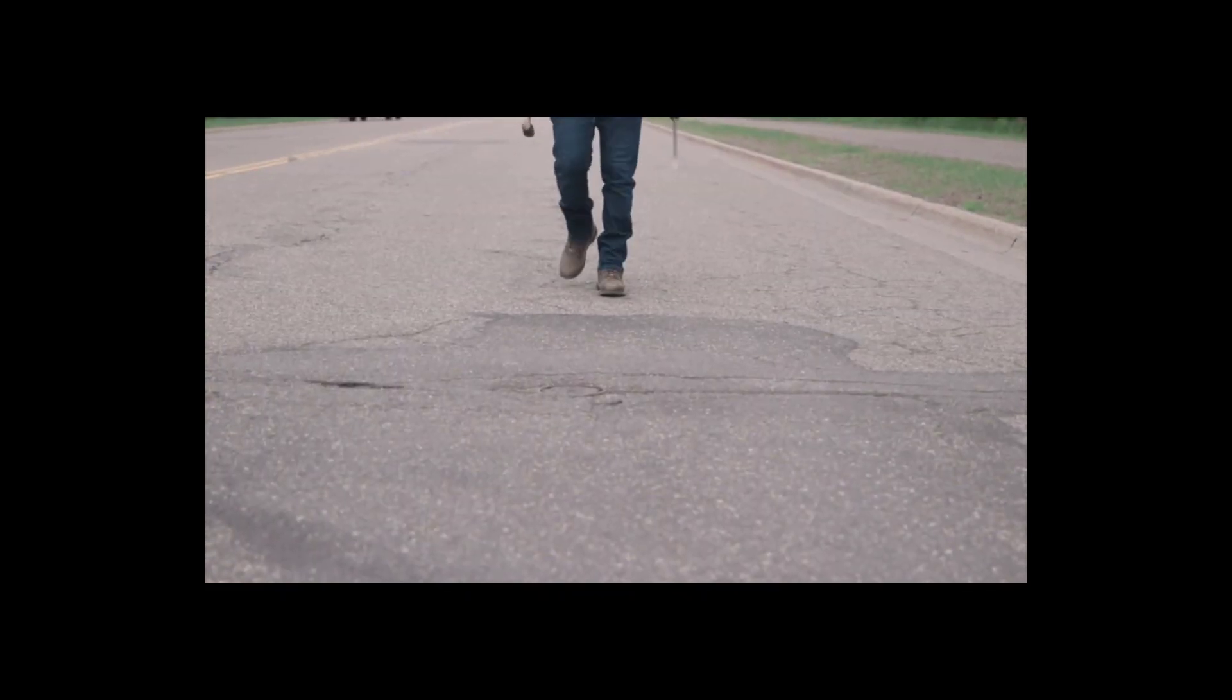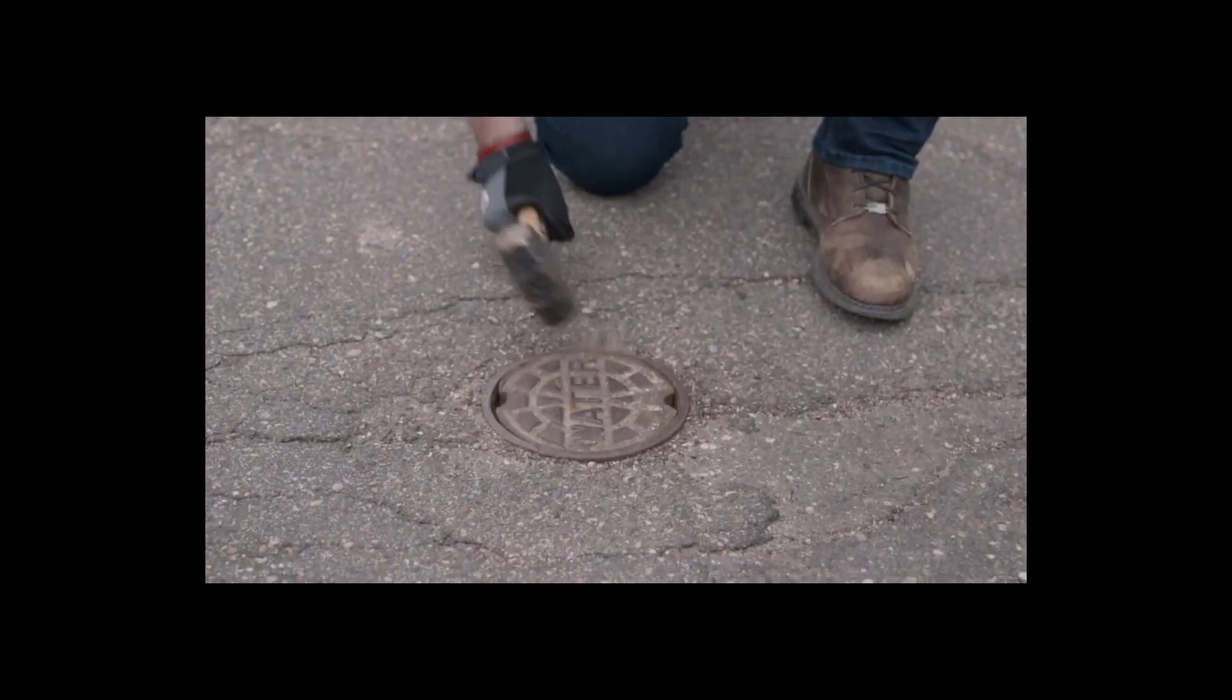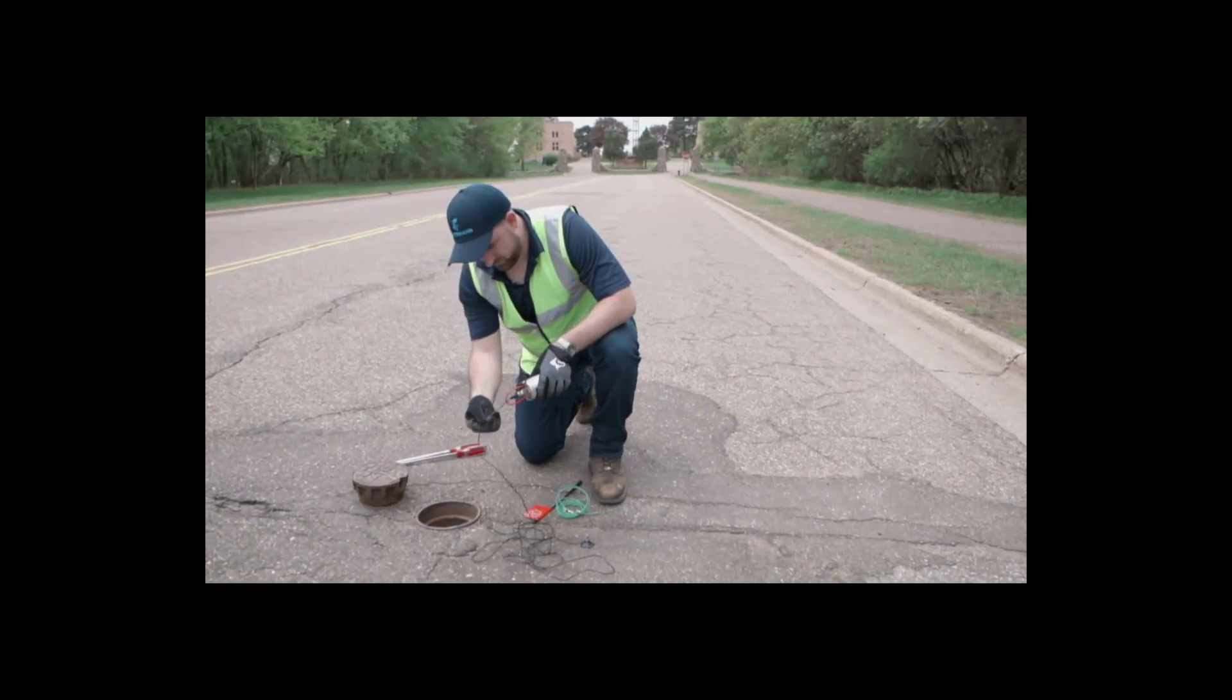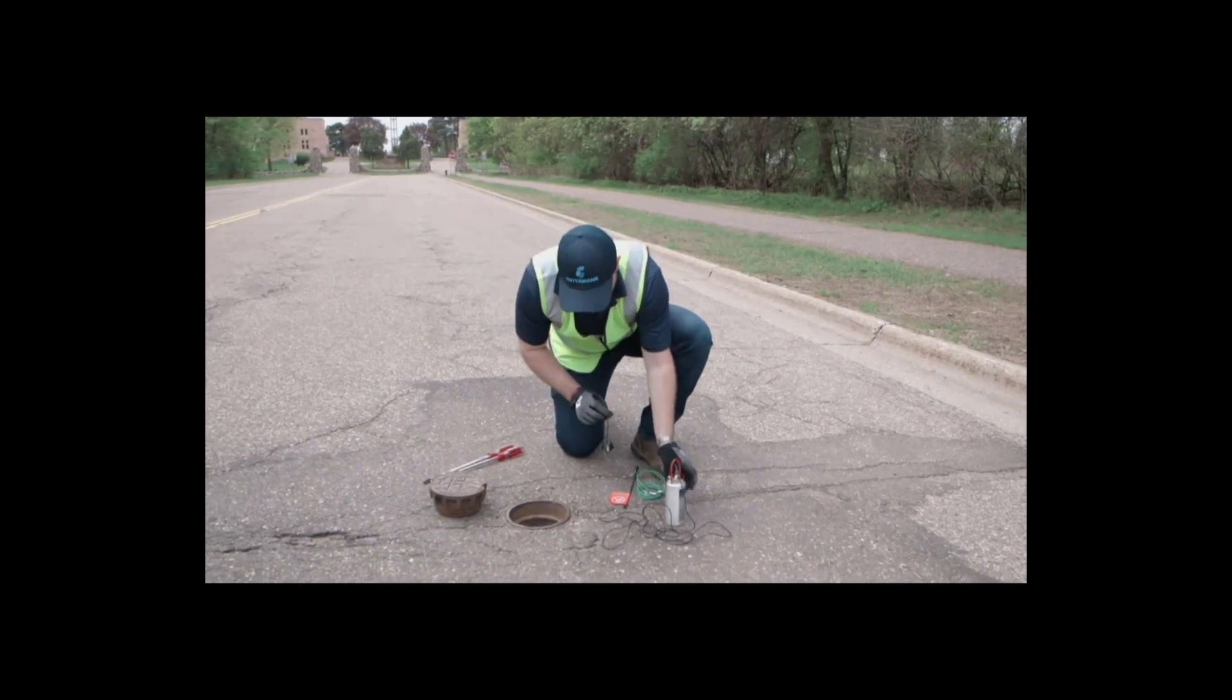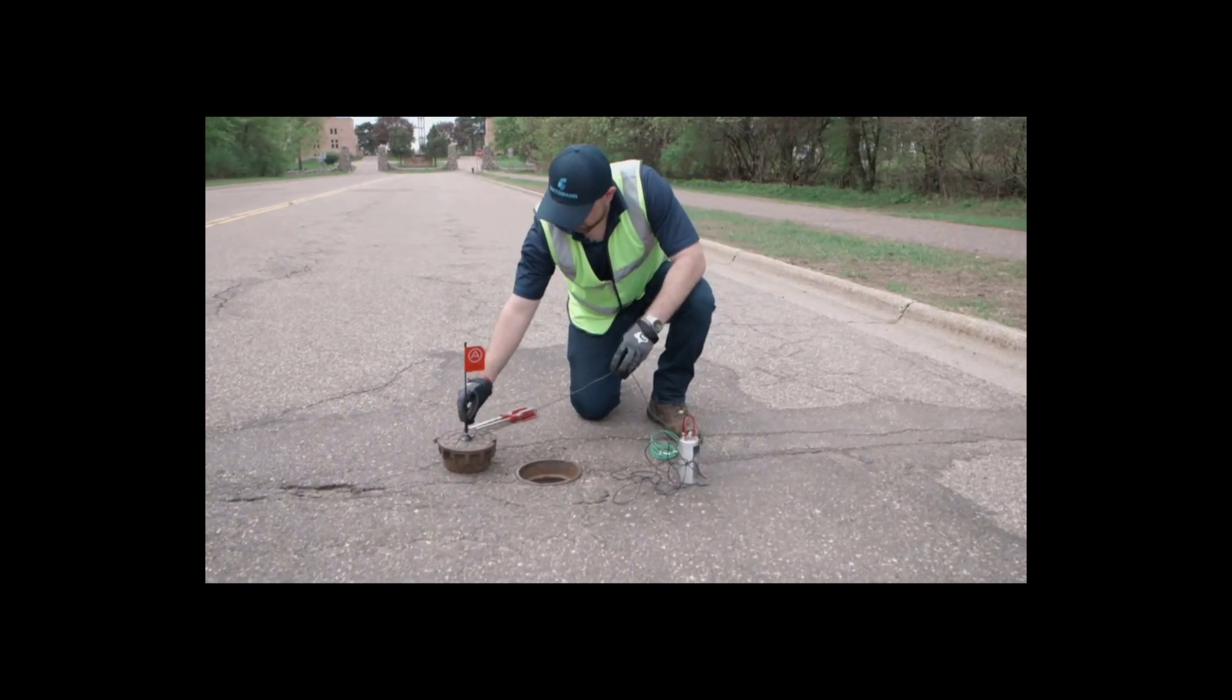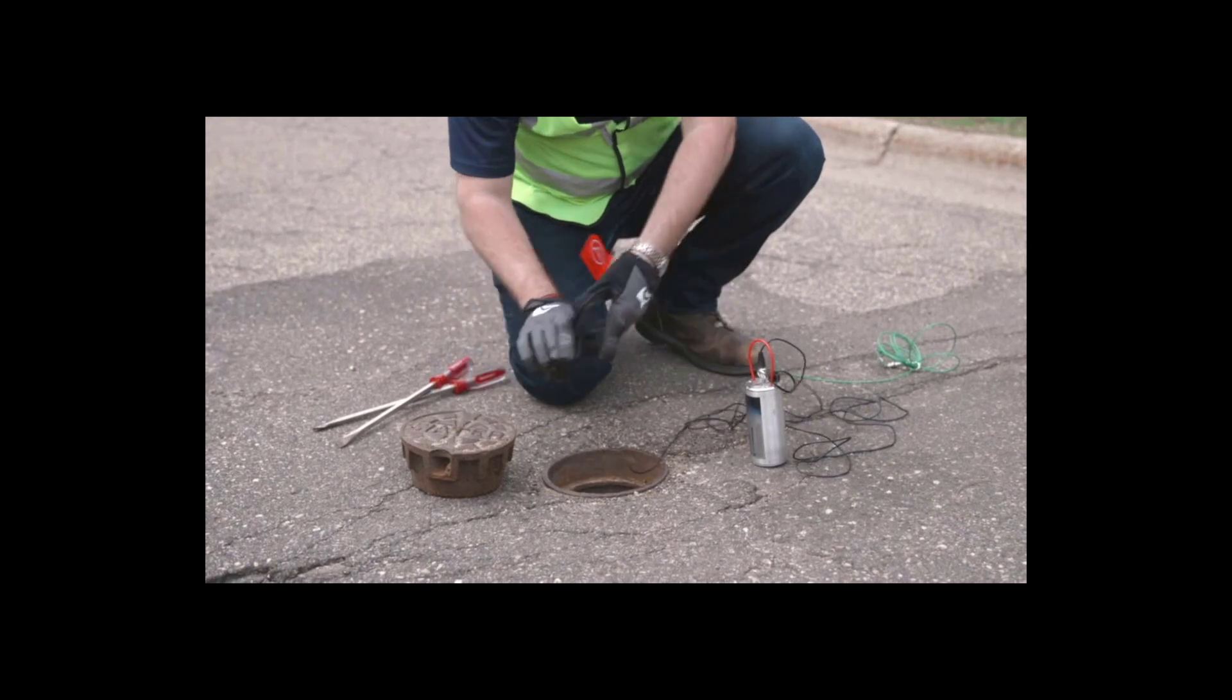Once all the components are fully charged, sensors A and B are deployed magnetically on listening points on either side of the suspected leak position. These points are typically in-line valves or hydrants located on the water main. Correlation site preparation is very important prior to deploying the sensors. It is critical the sensors are positioned in the location that has the least interference and the clearest leak noise.